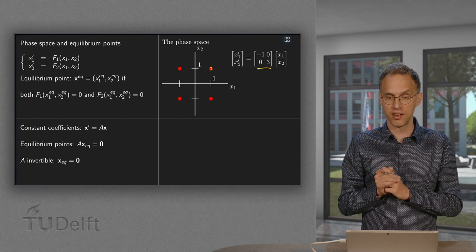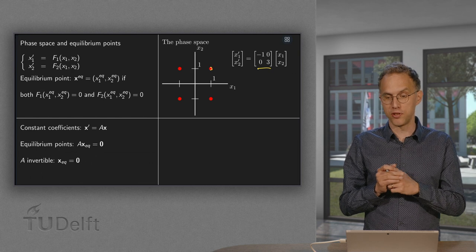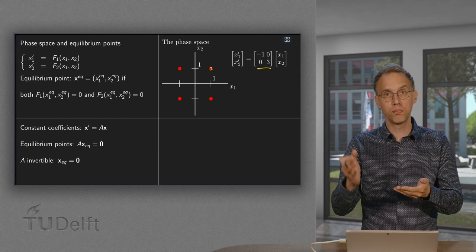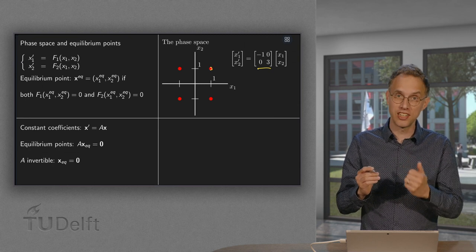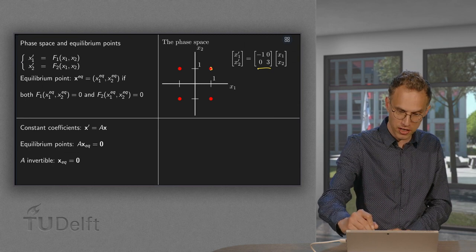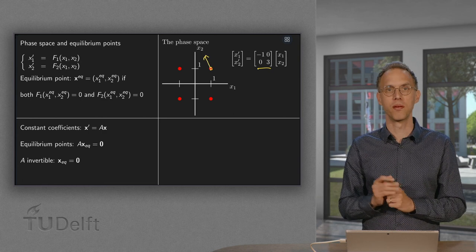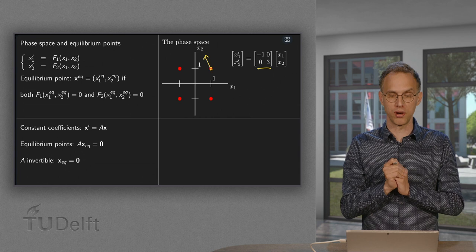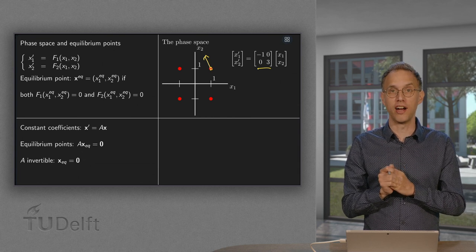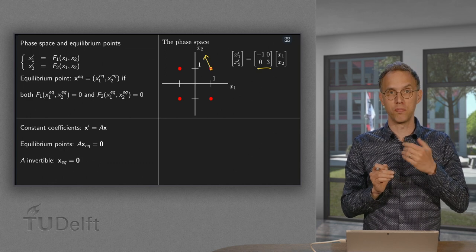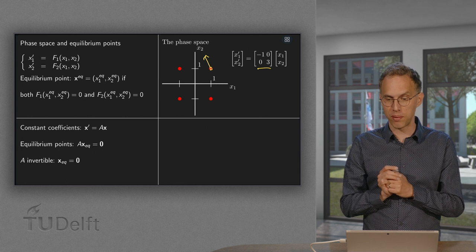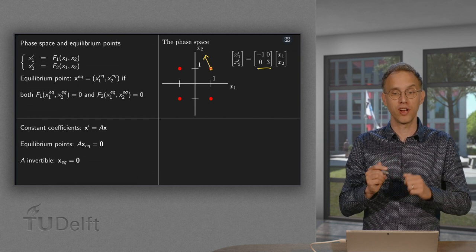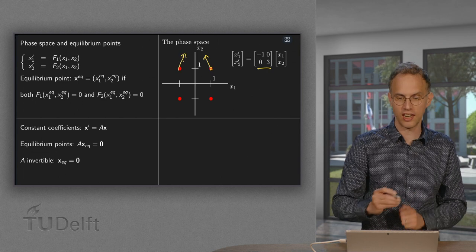At point (1,1): x1' equals -1 times 1 plus 0 times 1, so x1' equals -1, and x2' equals 3. So x1 is decreasing and x2 is increasing — we are going in direction (-1, 3). Similarly, at point (-1, 1): x1' equals 1 and x2' equals 3, so direction (1, 3). At (1, -1) we get direction (-1, -3), and at (-1, -1) we get direction (1, -3).